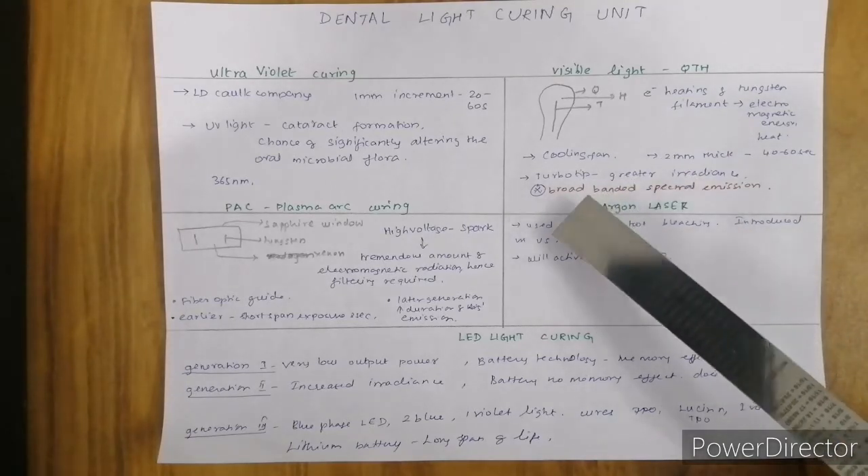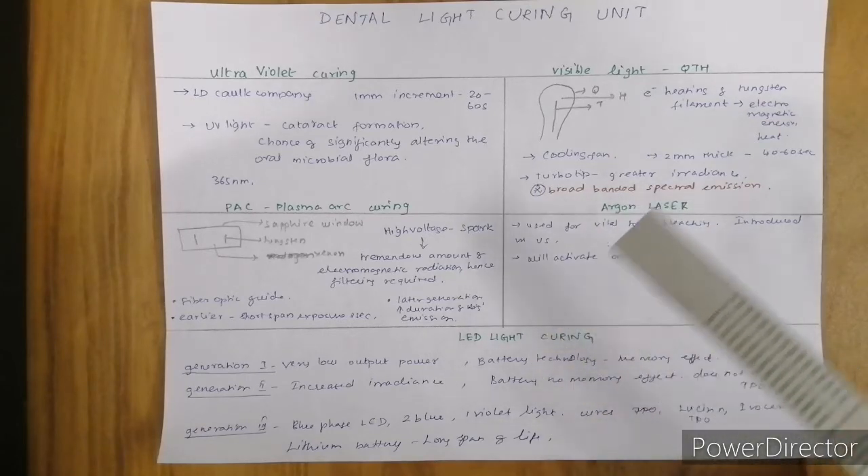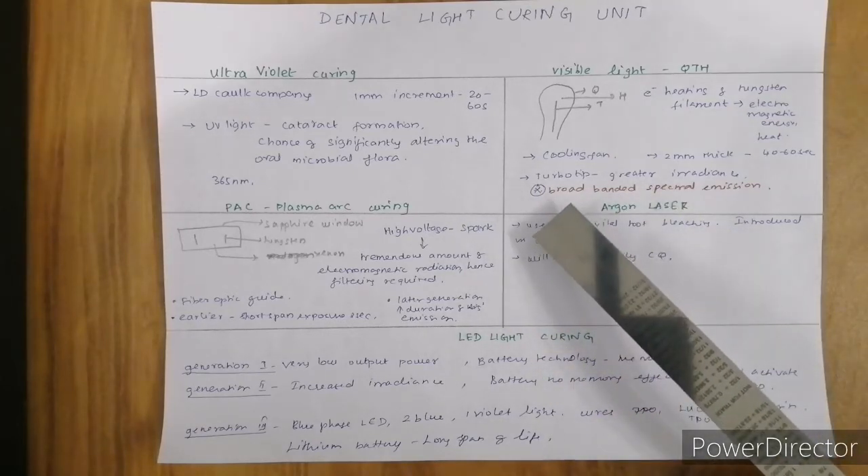When using turbo tip mode, we can have greater irradiance. A positive aspect of quartz tungsten halogen is its broad-banded spectral emission, so most photo initiators can be activated.